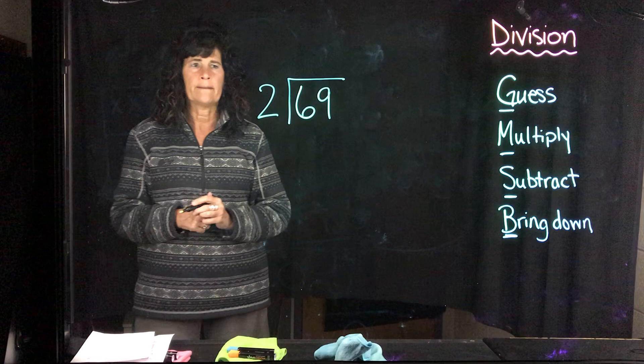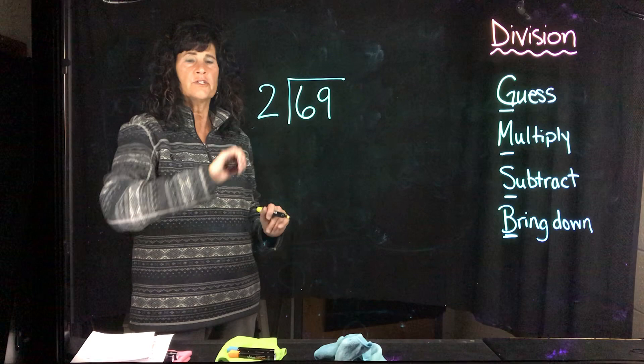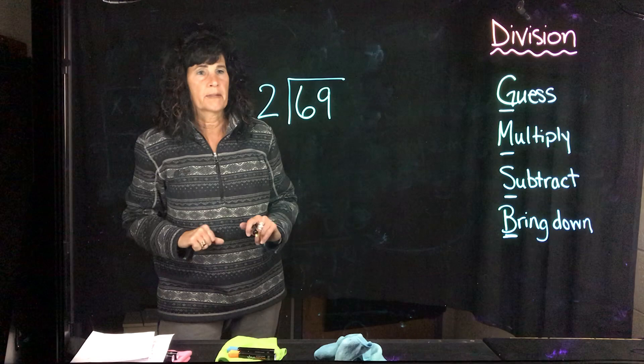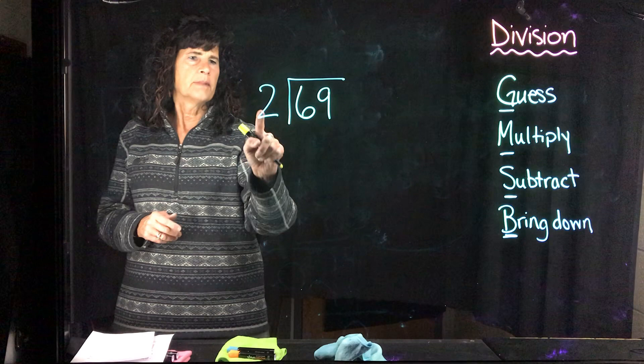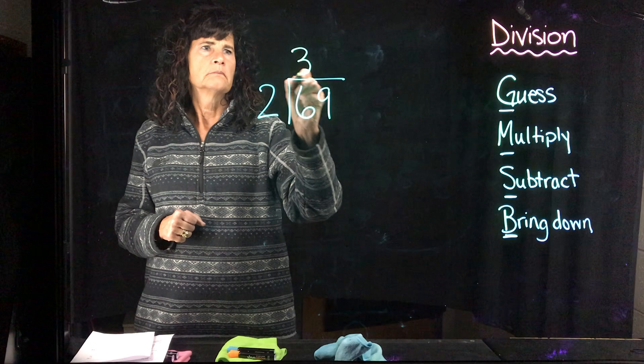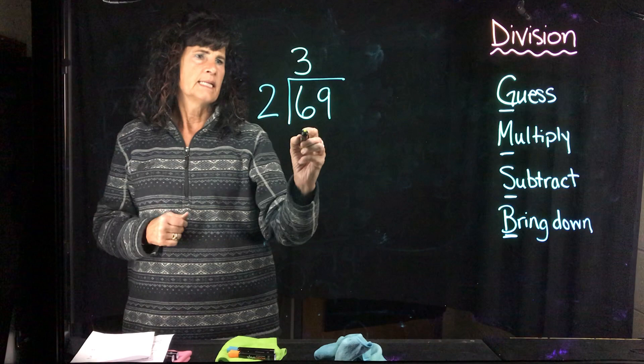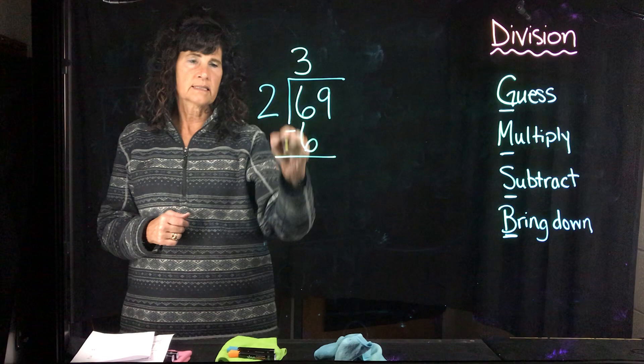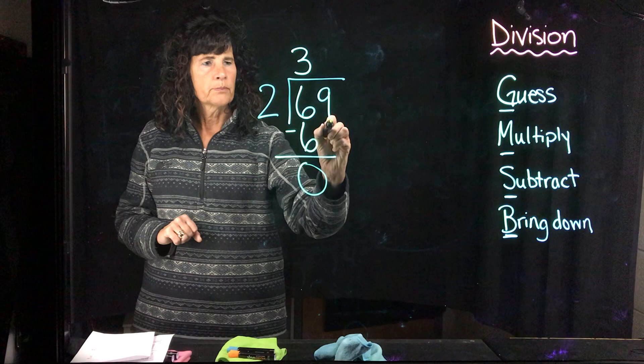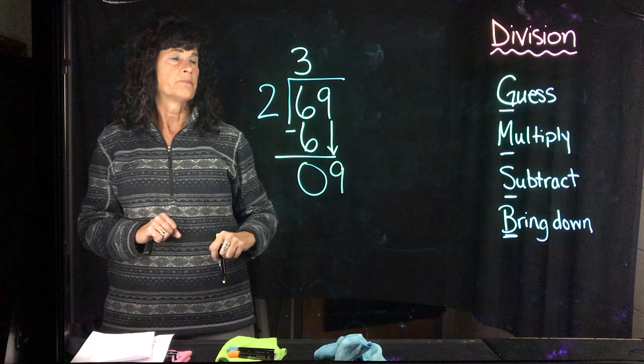Let's take 69 and divide that by 2. Alright, my dividend - the amount that I'm going to be dividing. My divisor - the number of groups I'm dividing it into. And the quotient, which is what I'm going to find, which is the number that one group gets. I'm going to guess. How many 2's go into 6? 3. I'm going to multiply. 3 times 2 is 6. Subtract. 6 minus 6 is 0. Bring down the next number, which is a 9. Go back up to the top. Back to guess.